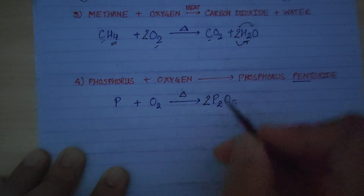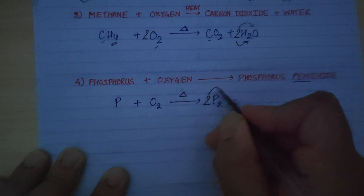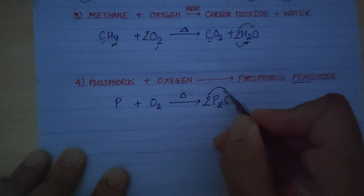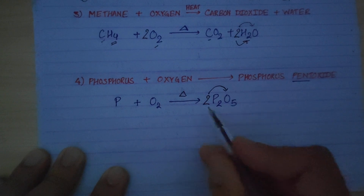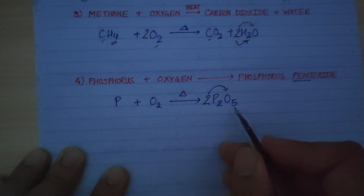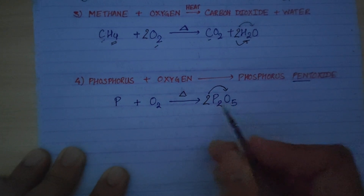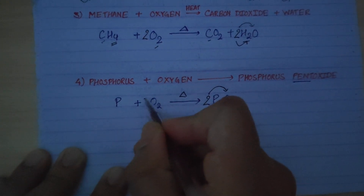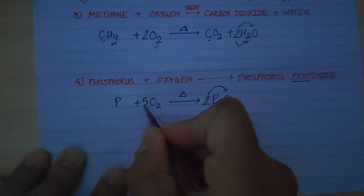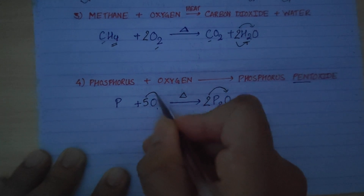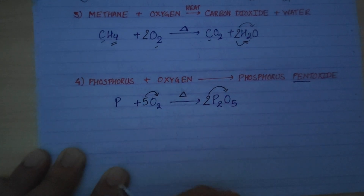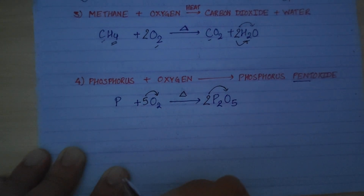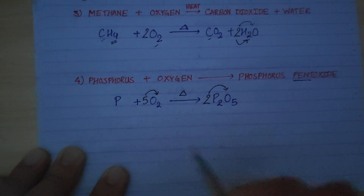So we balance: place coefficient 4 in front of P on the reactant side and coefficient 5 in front of O2. Phosphorus: 4 on each side — balanced. Oxygen: 5 times 2 equals 10 on reactant side; 4 times P2O5 gives 4 times 5 equals 20 — we adjust coefficients accordingly. This is how we balance a chemical equation using the trial method. Thank you.